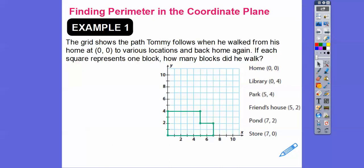Let's find the perimeter of this guy. So it says, the grid shows the path that Tommy follows when he is walking from his home at zero, zero, to various locations, and then back home again. So each square represents one block. How many blocks did he walk? So what I'm going to do is just go from home, which is zero, zero, to the library, zero, four. So that is this distance right here. So that distance is four right there. And we're just going to add up the blocks.